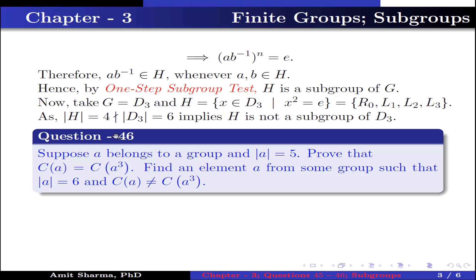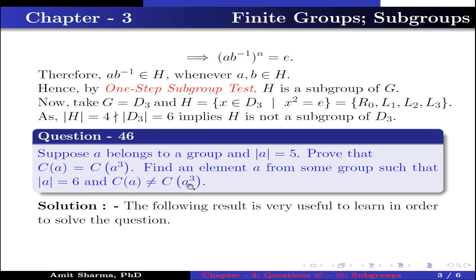Question number 46: Suppose A belongs to a group and the order of A is 5. Prove that the centralizer of A equals the centralizer of A cubed. Find an element A from some group such that the order of A is 6 and the centralizer of A is not equal to the centralizer of A cubed.